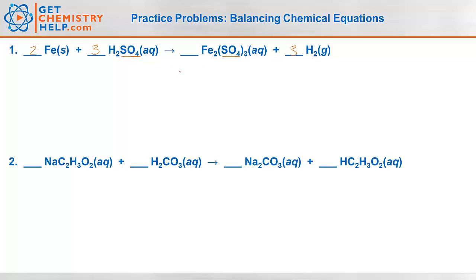Let's make a little table to verify everything is balanced. We have iron, hydrogen, and sulfate. On the reactant side we have two irons; on the product side, two irons. Hydrogen: three times two is six on the reactants, and three times two is six on the products. Sulfate: three on the reactants and three on the products. That reaction is balanced.